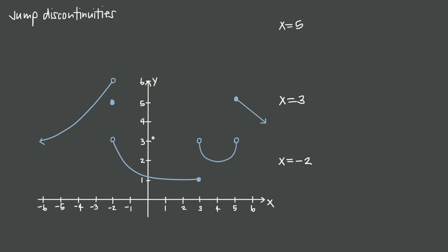That's not the same as an infinite or essential discontinuity, which is the discontinuity created by a vertical asymptote. Jump discontinuities are ones that look like these — there's a big gap in the graph here, here, and here. Not just a single point or hole, which is a point discontinuity, but not a vertical asymptote discontinuity either.